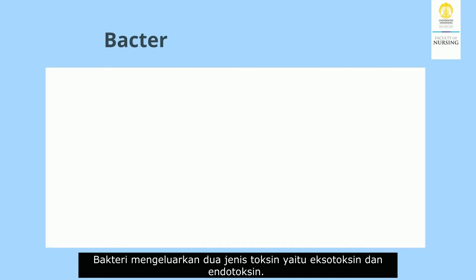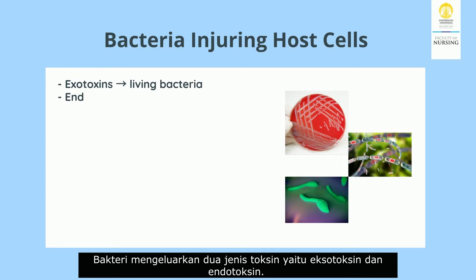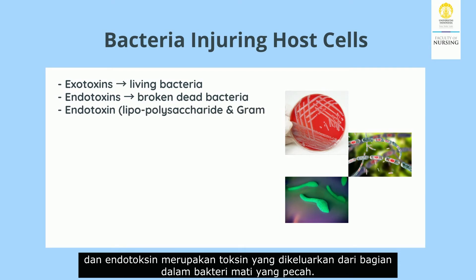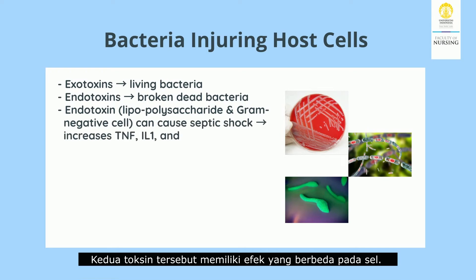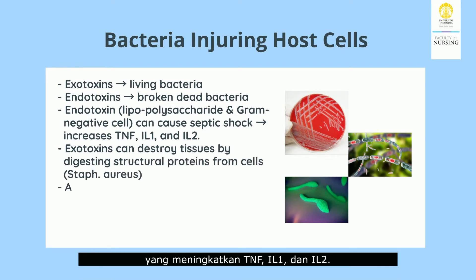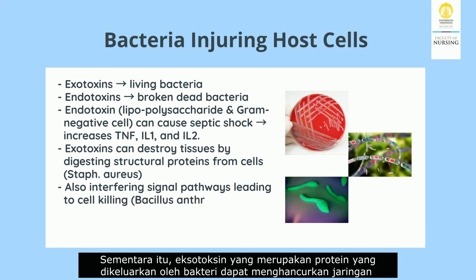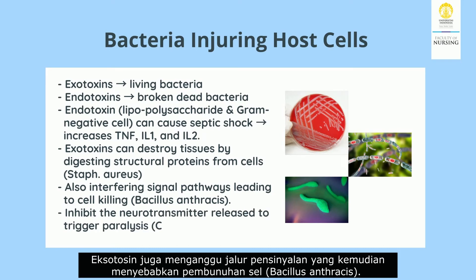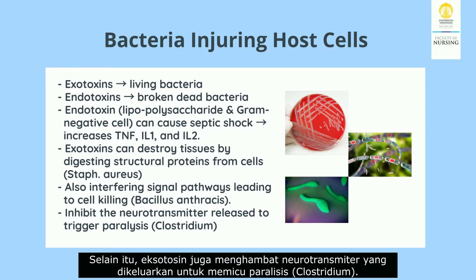Bacteria secrete two types of toxins: exotoxins and endotoxins. Exotoxins are secreted from the surface of living bacteria, while endotoxins are secreted from inside broken or dead bacteria. Endotoxins, which are lipopolysaccharides and a component of Gram-negative cell walls, can cause septic shock, increasing TNF, IL-1, and IL-2. Exotoxins, which are proteins released by bacteria, can destroy tissues by digesting structural proteins from cells.